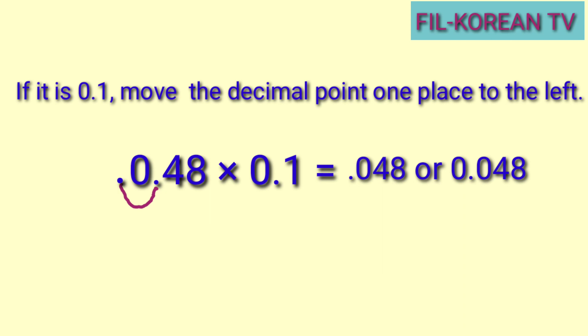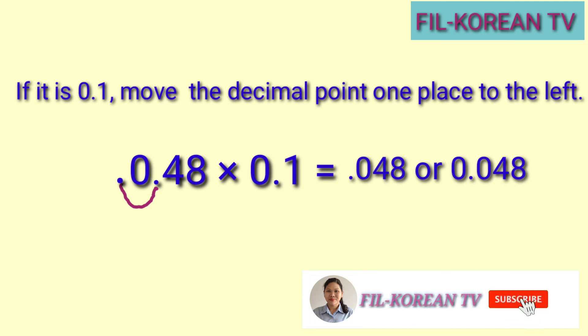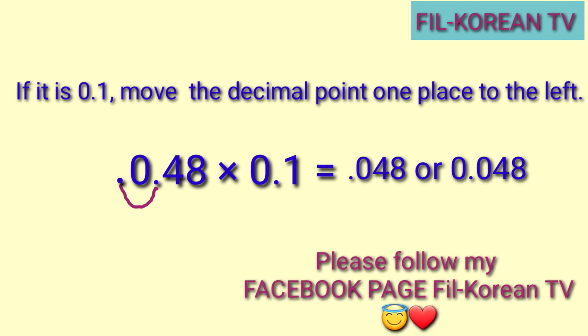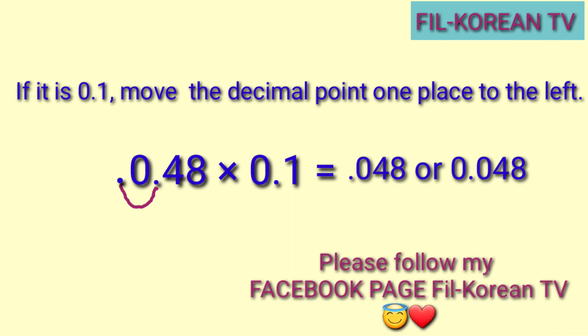Sa pagsulat ng answer, pwede natin lagyan ng zero bago ang decimal point. Pwede rin namang hindi, kasi pareho lang yung value ng number na yan — ang decimal number. Pero ang common na ginagamit kapag decimal number ay nilalagyan siya ng zero bago ang decimal point. Yan ang madalas na ginagamit.